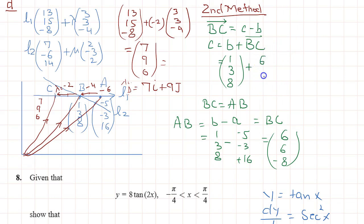So BC is (6, 6, -8). So C equals B plus BC, that will be 1 plus 6 is 7, 3 plus 6 is 9, and 8 minus 8 is 0. So that will be 7i plus 9j.